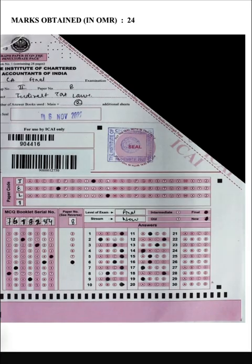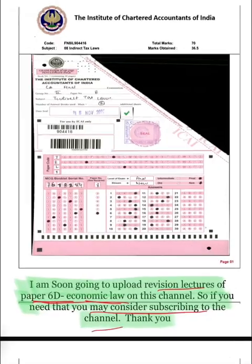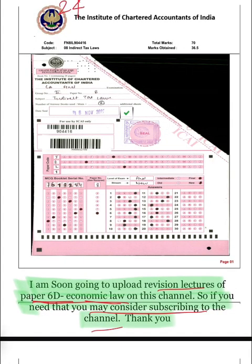Now coming back to my certified copies. First of all, I will show you my MCQ sheet. I received 24 marks in my MCQ part, and 37 marks in my descriptive, and that comes down to 61 out of 100.